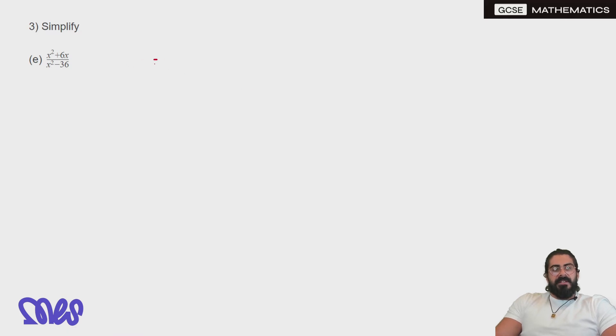x squared plus 6x, we can only take out an x from that. And on the bottom, difference of two squares again. So we have x and x, 36 is 6 and 6, plus and minus. x plus 6 is go. We have x over x minus 6.